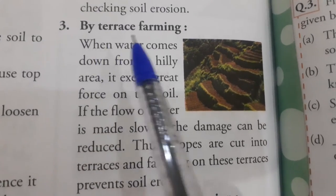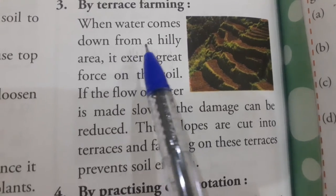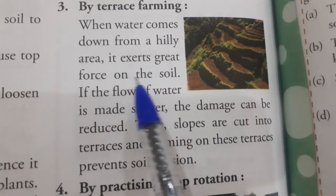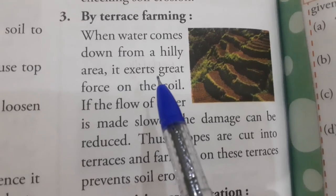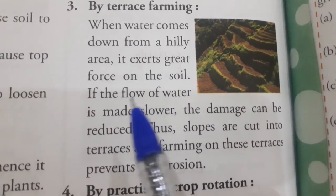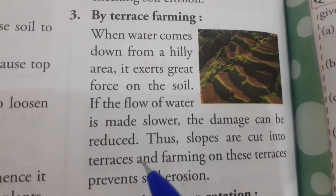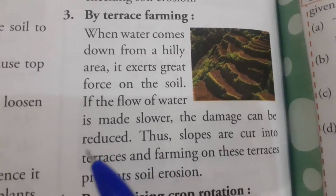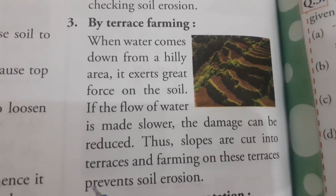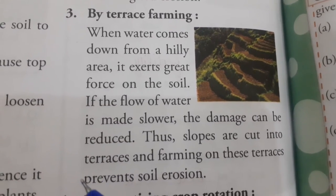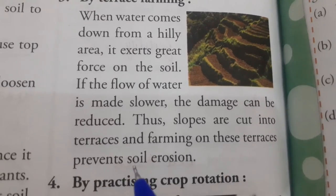Next method is terrace farming. When water comes down from a hilly area, it exerts great force on the soil. Jab hill se paani aata hai toh bahut zyada pressure lagata hai soil ke upar. If the flow of water is made slower, the damage can be reduced. Thus, slopes are cut into terraces and farming on these terraces prevents soil erosion.